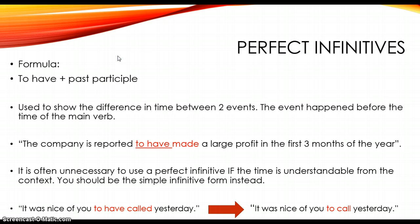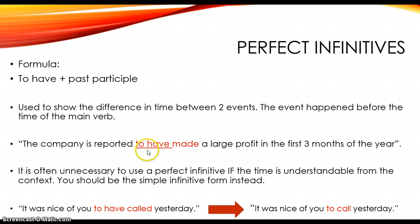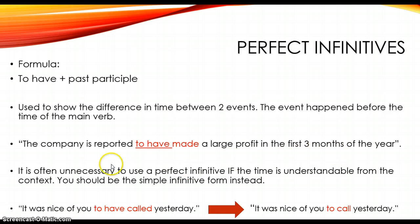Let's talk about perfect infinitives. The formula is: to have plus the past participle. Perfect infinitives are used to show the difference in time between two events — one event happened before the time of the main verb. I have two events: the first event is that a large profit was made in the first three months of the year, and the second event is that the company reported the profits.